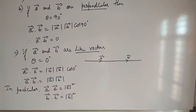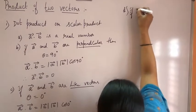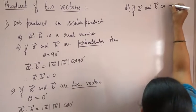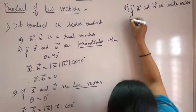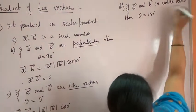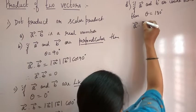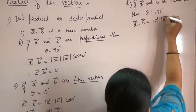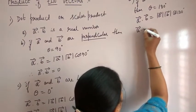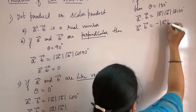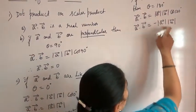If we consider unlike vectors — vectors having opposite direction — then theta is equal to 180 degree. Therefore, the dot product becomes vector A dot vector B equals magnitude of vector A into magnitude of vector B into cos 180 degree. Cos 180 degree value is minus 1. Therefore, vector A dot vector B equals minus magnitude of vector A into magnitude of vector B.